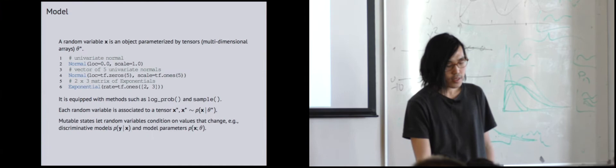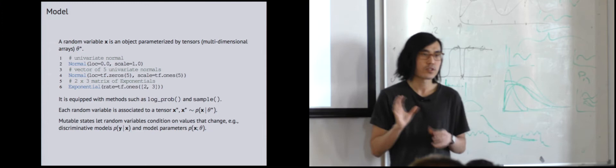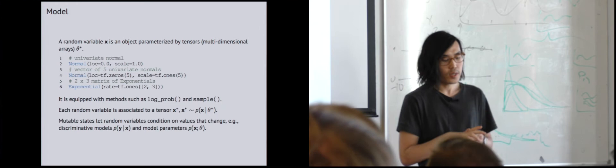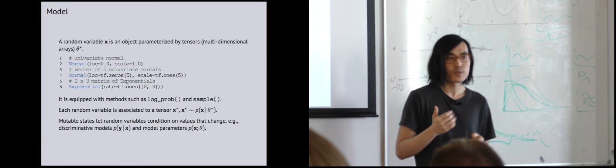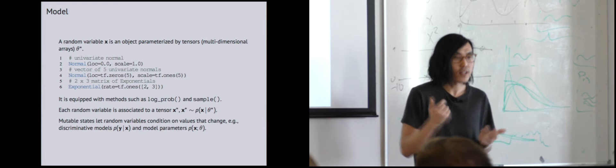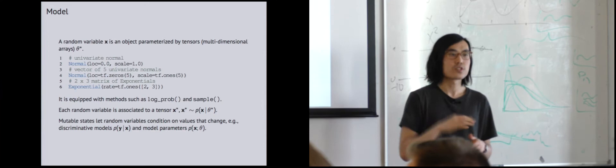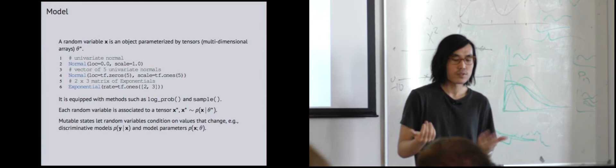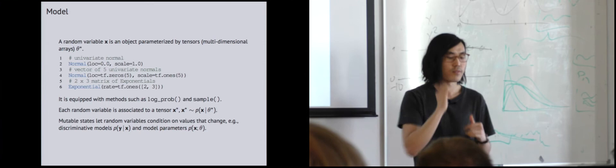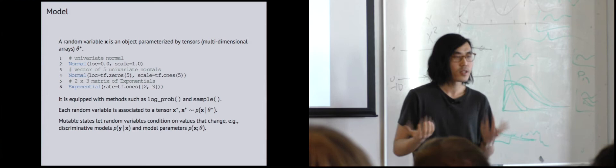Let me give an overview of Edward semantics. How does Edward represent models? We start with a primitive: a random variable. A random variable is a class parameterized by tensors or multidimensional arrays. If you wanted to define a normal random variable, you'd have a univariate distribution with scalar parameters. If you wanted a vector of five univariate normals, you'd have a vector of five zeros or five scale parameters representing five normal random variables — and analogously for matrices and tensors. These random variables are equipped with methods like log prob, mean, sample, variance, and mode.